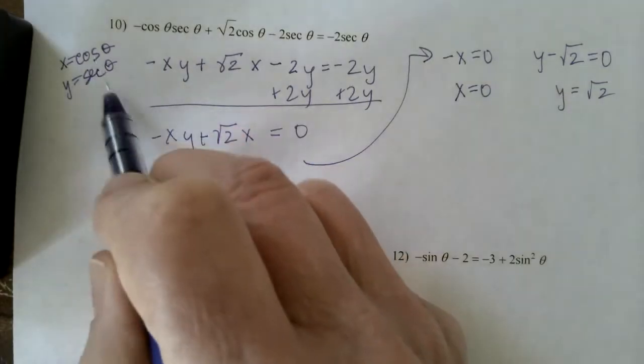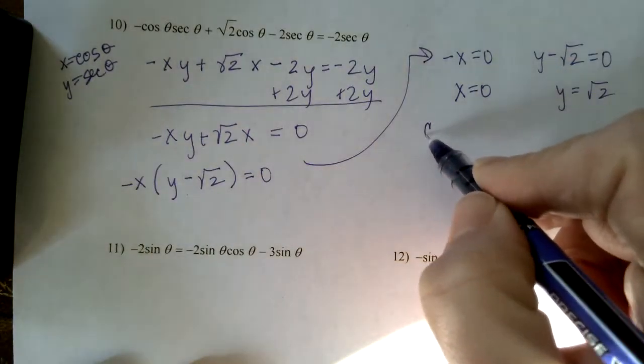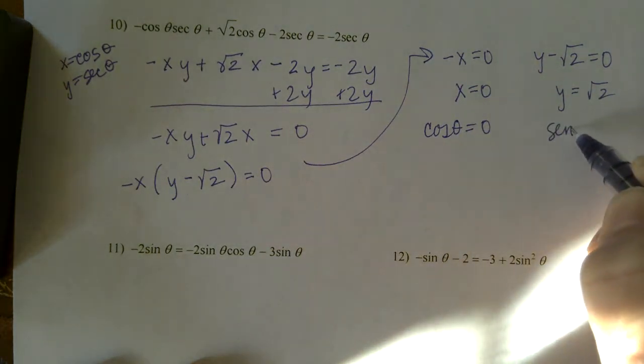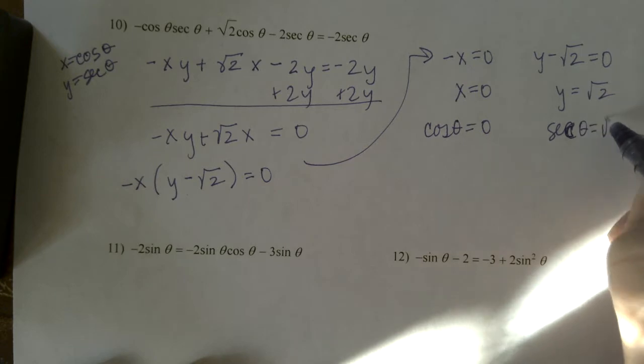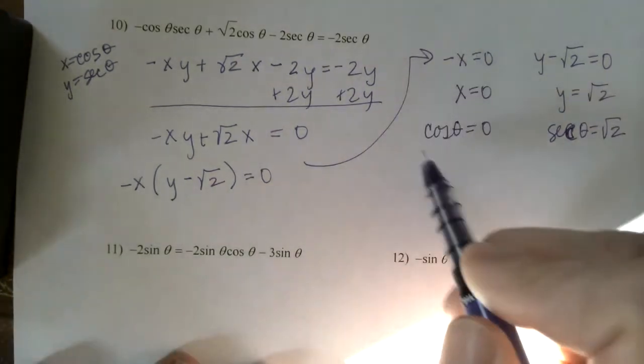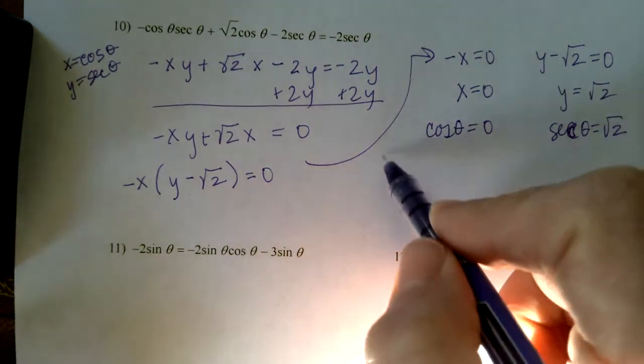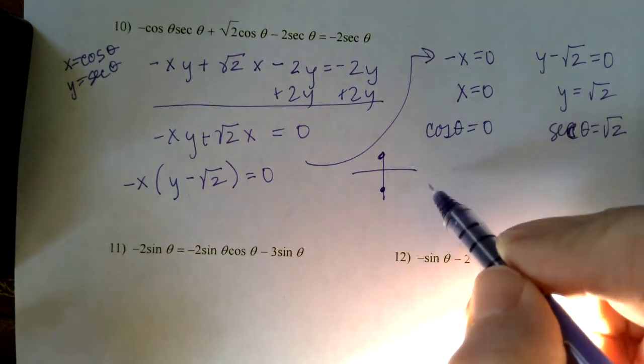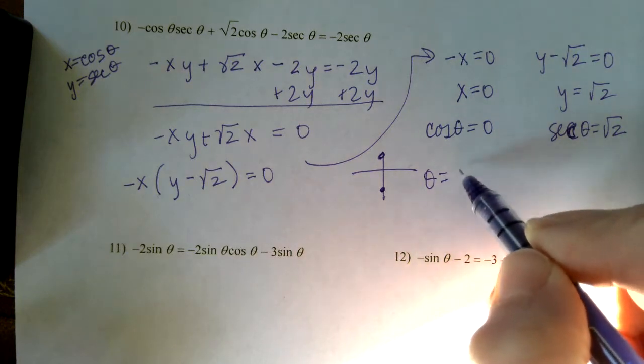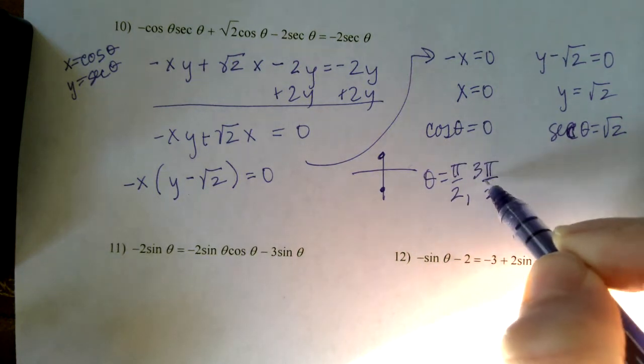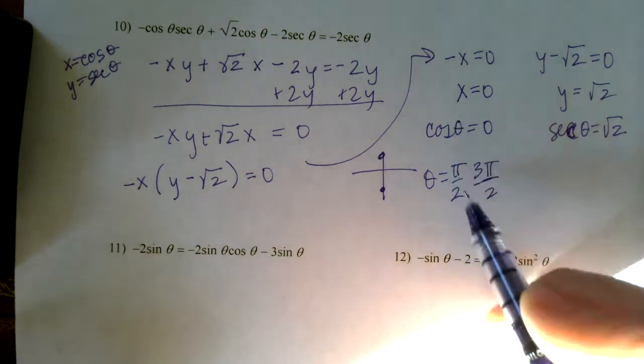But this is where I'd plug back in the trig function. So when is the cosine zero and when is the secant the square root of 2? Cosine of zero is not so bad. That one happens up here and down here. So that's when theta is pi over 2 and 3 pi over 2. So those are my two answers for that.